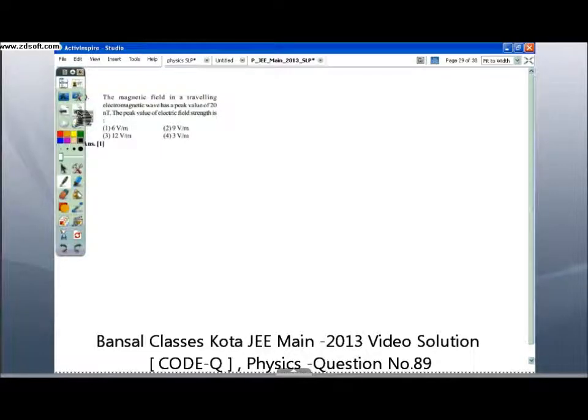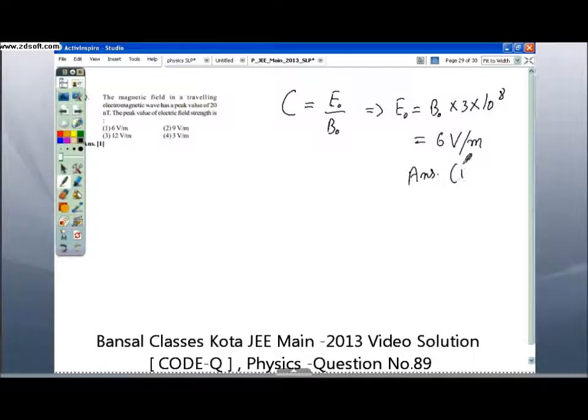Question 89: The magnetic field in a traveling wave has a peak value of 20 nanotesla. The peak value of electric field strength is: For this, we are simply going to use the formula C equals E naught by B naught, which gives us E0 equals 3 times 10 to the 8 times 20 times 10 to the minus 9, which is 6 volt per meter. The answer is A.